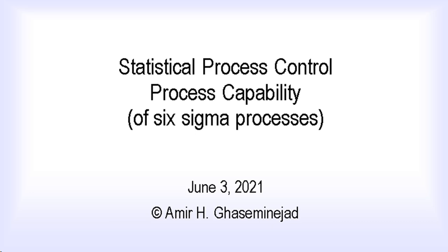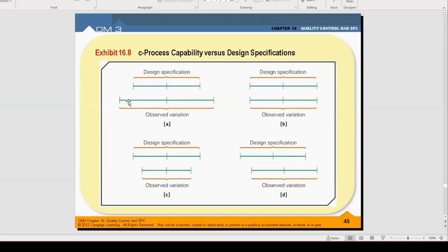Statistical process control for six sigma processes: in the control department of a six sigma process, what is the chance of finding a flaw when checking everything? In a six sigma process, that is 6.8 out of a million for the customer. So if the control department follows what we discussed, like a sample of 100 or a sample of three in the case of X-bar, they would most probably not find any problem for years.